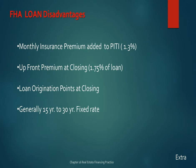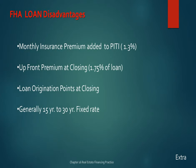FHA advantages include: you can borrow the closing costs, qualifying ratios can be higher than on conventional loans, you will need mortgage insurance (MIP), the loan can be assumed by someone else, and there are no prepayment penalties. They can also bend some credit standards, though currently lenders may have gone too far the other way.